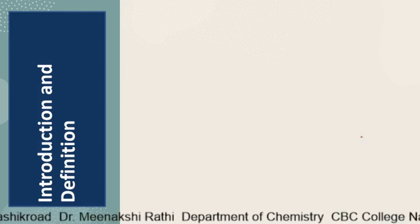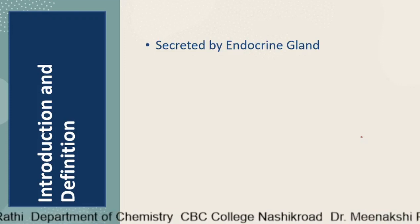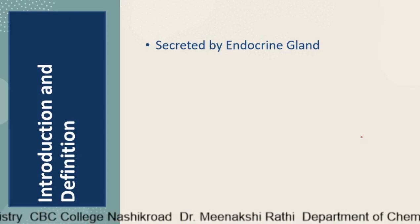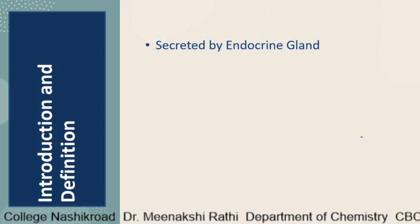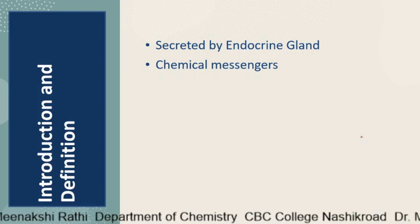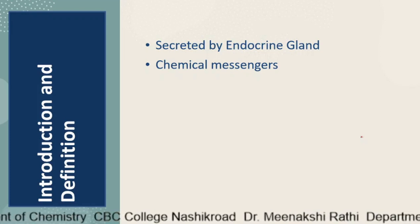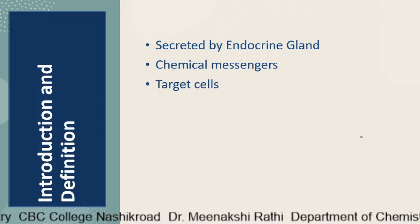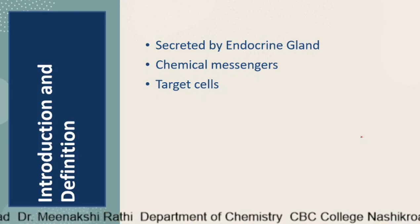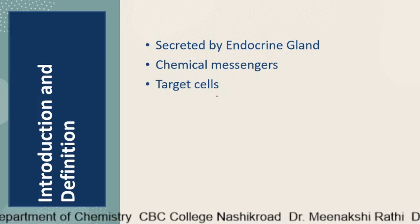Hormones are the chemical messengers — that is the simplest definition. More formally, hormones are organic substances produced in small amounts by specific glands or tissues known as endocrine glands, secreted into the bloodstream to control metabolic and biological activities in the target cell.